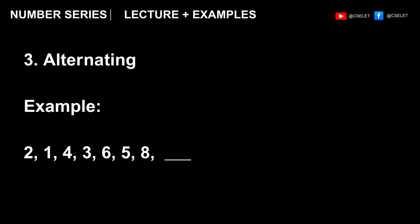The third pattern is alternating. In this example, there are two alternate patterns here. Both are ascending, but one is a set of even numbers. That's 2, 4, 6, and 8. And the other are odd numbers. So 1, 3, and 5. Therefore, for this series, the missing number is an odd number. Therefore, the correct answer is 7.